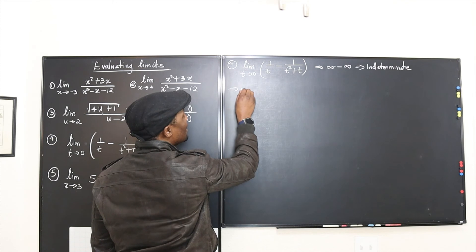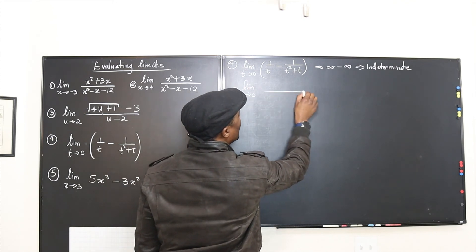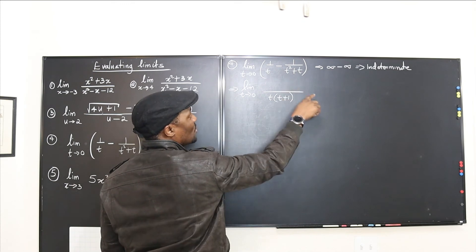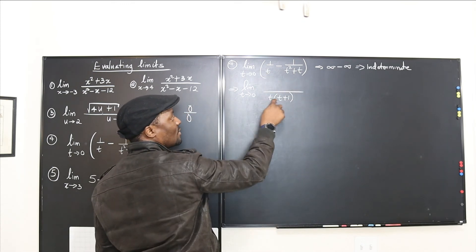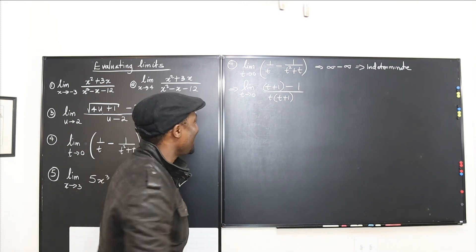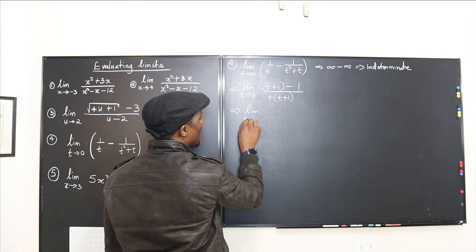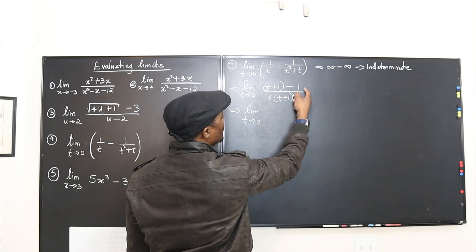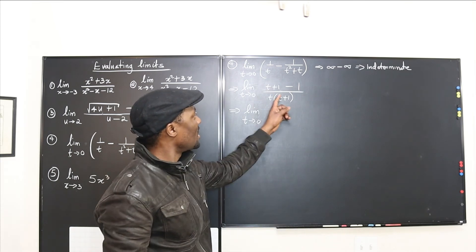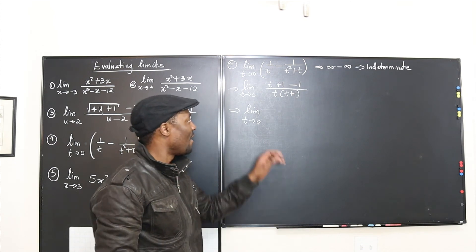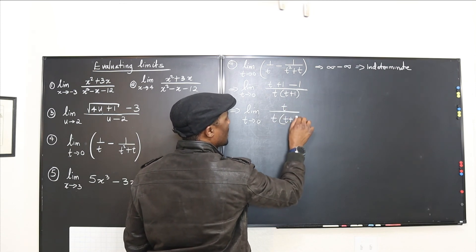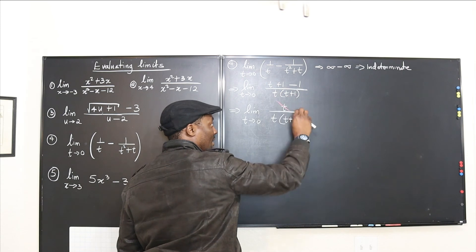We write the limit as t goes to 0. The common denominator is t(t plus 1). The numerator will be (t plus 1) minus 1, which gives just t. Over t(t plus 1). So we have the limit as t goes to 0 of t over t(t plus 1).